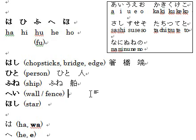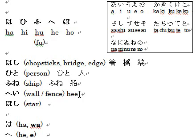Next word is へい, typed H-E-I. Note the pronunciation — because E and I are in the same row, we pronounce the long vowel, so it sounds more like H-E-E. For the kanji, へい means wall or fence. You might know the word かべ for wall as well, but へい is more like an outdoor fence — the kind between one house and the next, not an interior wall.